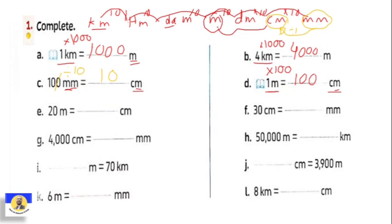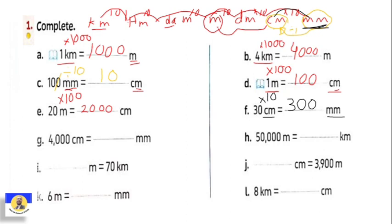Letter e: twenty meters equal how many centimeters? We multiply by one hundred. Twenty times one hundred equals two thousand centimeters. Next idea: we have centimeter and millimeter. Centimeter is greater than millimeter — going from greatest to smallest we multiply. Centimeter to millimeter is ten. So thirty times ten equals three hundred millimeters.